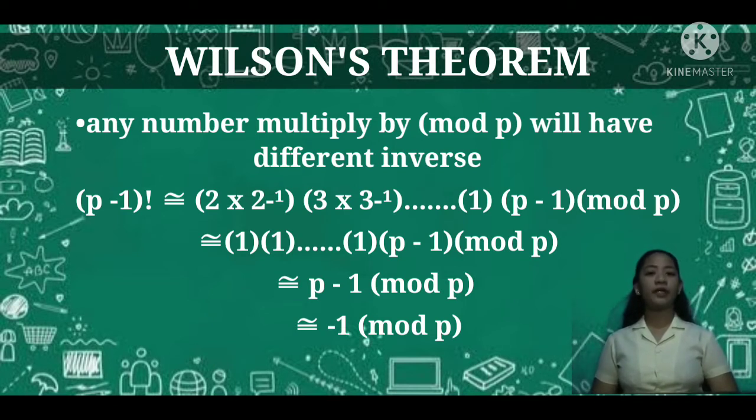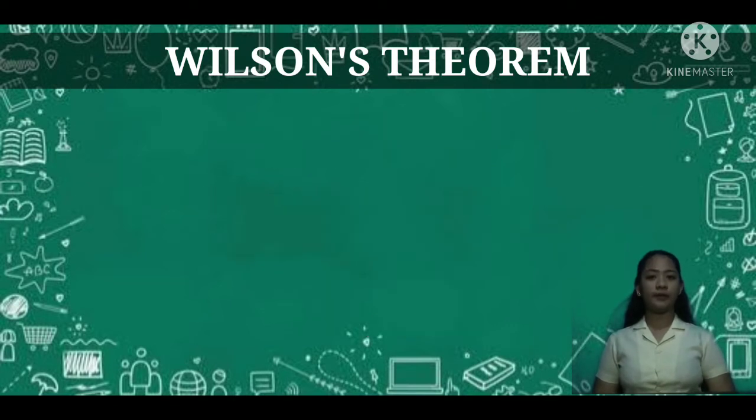Everything will be cancelled out and we're left with (p-1) (mod p), which is also congruent to -1 (mod p) just like we solved earlier, which proves that (p-1)! ≅ -1 (mod p).